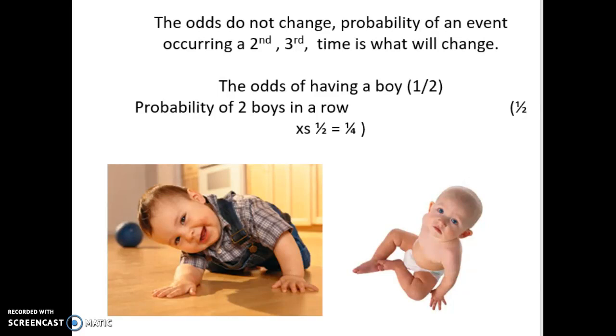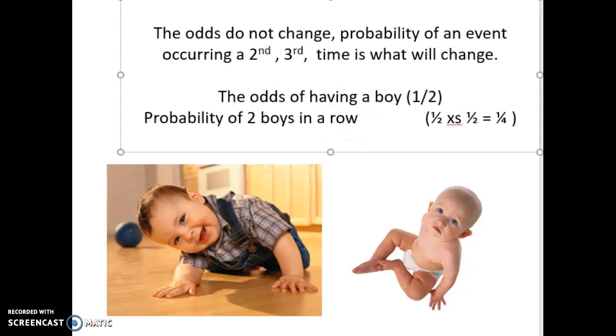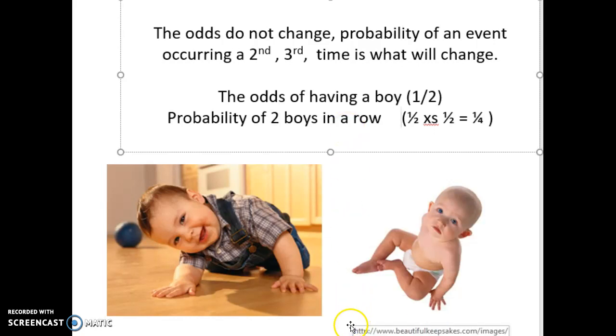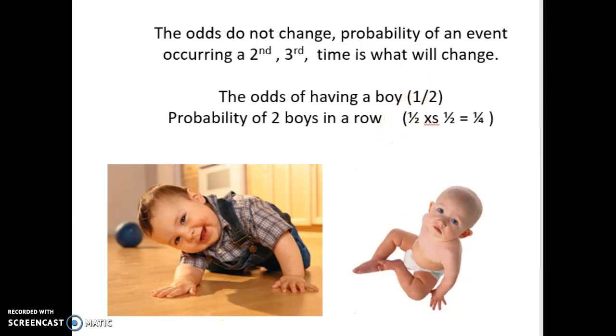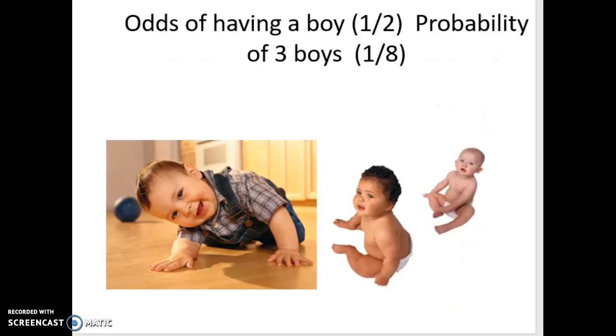Second child's on the way. The odds are still 50-50 that your second child is going to be a boy. Now what changes is this thing called the probability. What is the likelihood you'll have two boys in a row? Well, that's where you multiply your odds, and you go one-half times one-half. The probability of two boys is one-fourth. We go to a third child. Odds are still one-half that you're going to have a boy, but the likelihood drops down to one out of eight. Your probability changes over the course of events, but your odds don't. We'll apply this to making money in the next lecture.